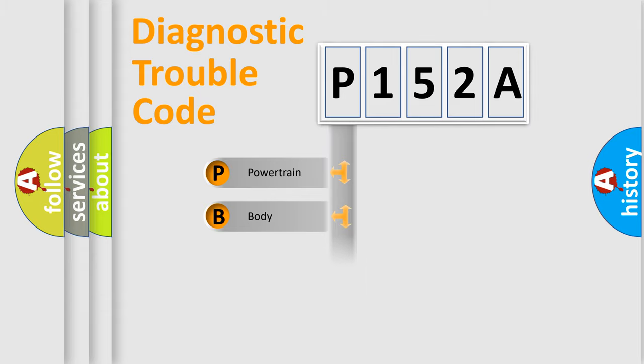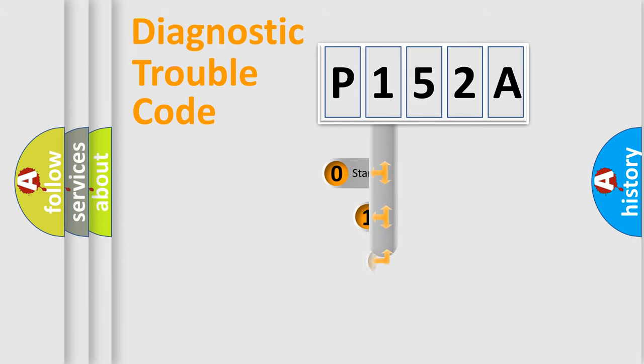Powertrain, Body, Chassis, Network. This distribution is defined in the first character code.